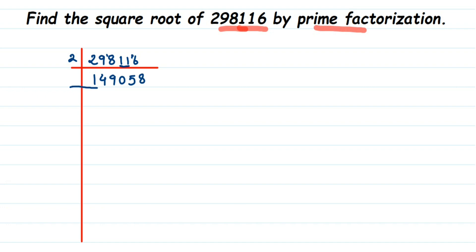So I'm going to divide this with 2 again. 2 sevens are 14 — we have 9. 2 fours are 8, 1 is a remainder, we got 10. 2 fives are 10. Now we have 5 — 2 twos are 4, then 1 is a remainder, that makes a number 18. 2 nines are 18. Now we got 9, it's an odd number.